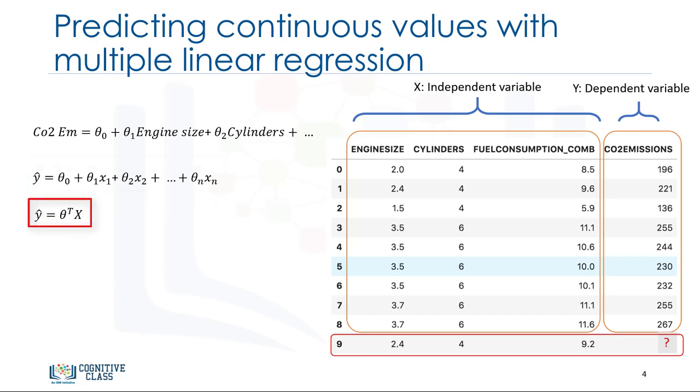Mathematically, we can show it as a vector form as well. This means it can be shown as a dot product of two vectors, the parameters vector and the feature set vector. Generally, we can show the equation for a multidimensional space as theta transposed x, where theta is an n by one vector of unknown parameters in a multidimensional space, and x is the vector of the featured sets. Theta is also called the parameters or weight vector of the regression equation.